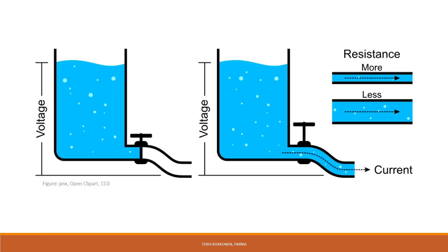When describing the basic concept of electricity, a common analogy is a water tank. The total electric charge would be analogous to the amount of water in the tank. Voltage is akin to the pressure of water. Electric current is equivalent to the volumetric quantity of flowing water over time. Resistance is similar to pipe diameter, where a high resistance means a very narrow pipe.